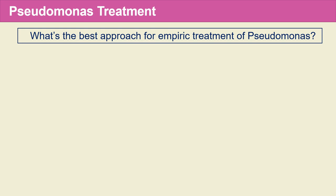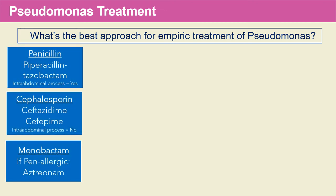Now that we know which antibiotics are effective against Pseudomonas, what's the best approach for empiric treatment? The first group to consider is piperacillin-tazobactam, ceftazidime, cefepime, and aztreonam. If there is a coexisting intra-abdominal infection, use piperacillin-tazobactam due to its anaerobic coverage. If no intra-abdominal process is occurring, use ceftazidime or cefepime. If the patient is penicillin-allergic, aztreonam is a good choice.